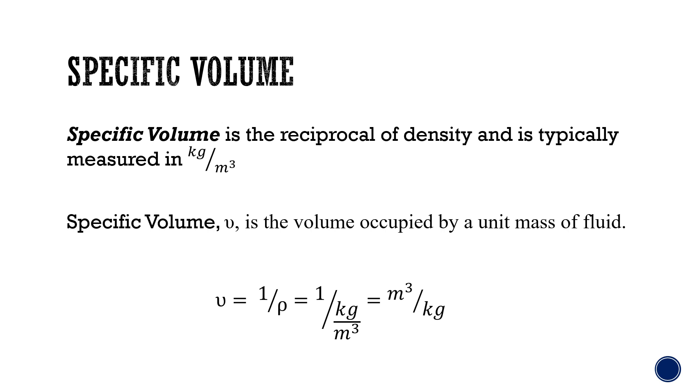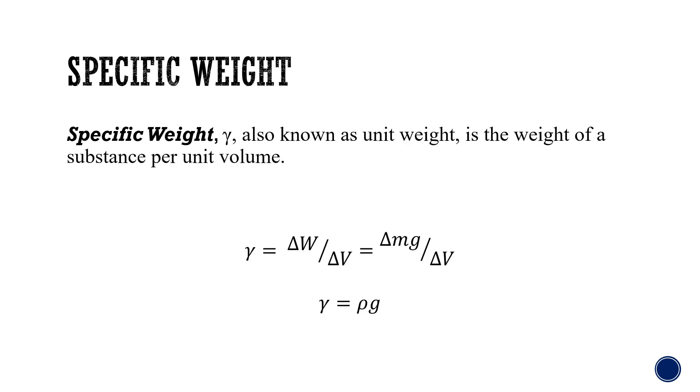The specific weight is the Greek symbol gamma, which is known as the unit weight of a substance per unit volume. Specific weight is an absolute property of a substance since it depends on the local gravitational field.